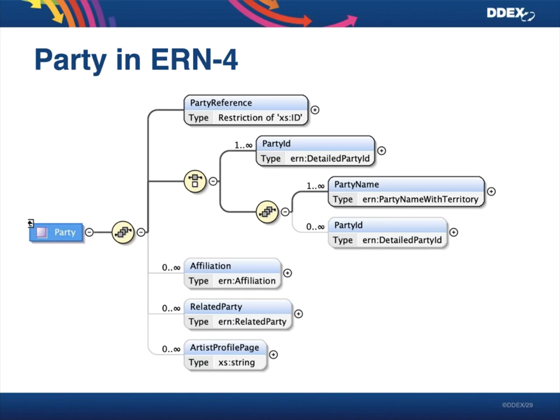There's another question — is it possible to communicate aliases and name variations as Discogs does? I'll defer that to the very end of this presentation, because at the moment the DDEX standards cannot really do that, but we're working on something that will be able to handle exactly that, as it is indeed an issue.